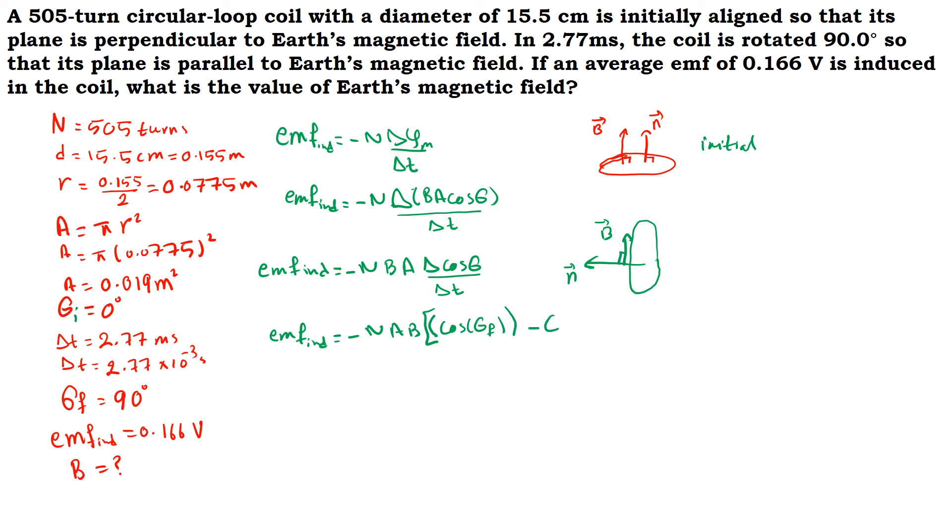Now I will rewrite the form: EMF induced is equal to minus N A B delta cosine theta. Delta cosine theta is cosine of theta final minus cosine of theta initial, which is cosine theta final minus cosine theta initial over delta T.